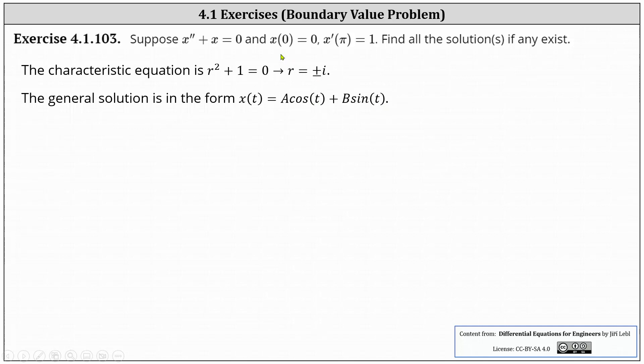And now we consider the conditions. First, we have x of zero equals zero, which means that we substitute zero for t into the general solution, the function value must be zero. This gives us a cosine zero plus b sine zero equals zero. And since sine zero is zero and cosine zero is one, this is only true when a is equal to zero. So now we know that x of t must equal b sine t.